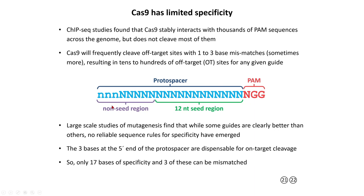What has been found is that the first three bases of the protospacer are surprisingly dispensable for on-target cleavage — so there's only 17 bases of specificity actually required, and the first three can be mismatched. In general, Cas9 tolerates more mismatches at the five prime end of the protospacer. These 12 bases near the PAM, which some groups call the seed region, are more specific and more important — certainly involved in those early stages of unwinding the genomic duplex and forming the CRISPR complex.